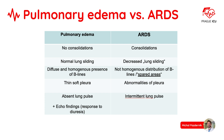In pulmonary edema there are no consolidations, there is normal lung sliding, B-lines are diffuse and homogeneous, there is thin soft pleura, absence of lung pulse, and appropriate echo findings. Compared to ARDS: in ARDS there are lung consolidations, decreased lung sliding, no homogeneous distribution of B-lines with some spared areas, abnormalities of the pleura, and intermittent lung pulse.